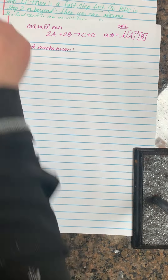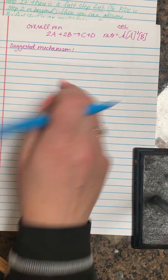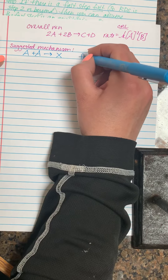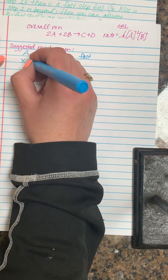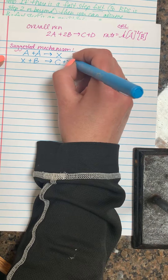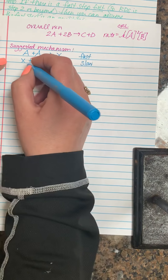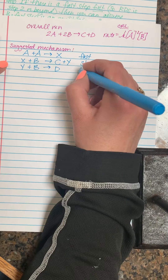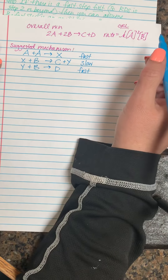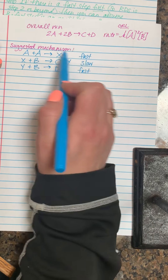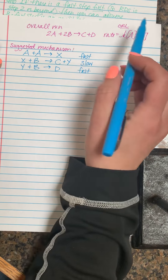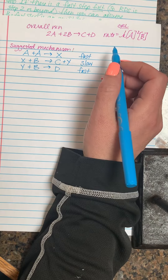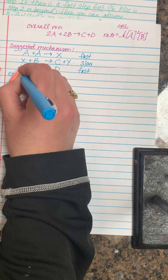The suggested mechanism has three steps. Step 1: A + A → X (fast step). Step 2: X + B → C + Y (slow step — this is our rate-determining step). Step 3: Y + B → D (fast step). We want to know whether the expected rate law from this mechanism matches the observed rate law given in the problem.